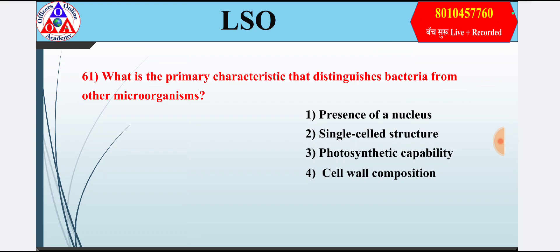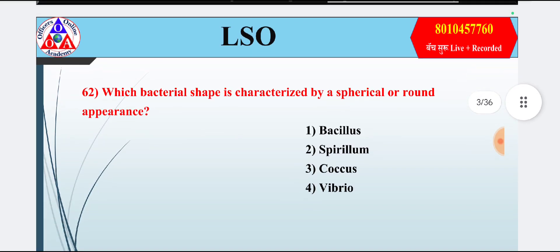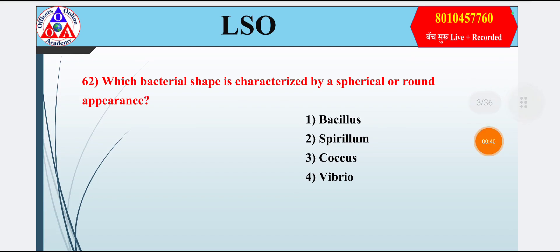Question 1: What is the primary characteristic that distinguishes bacteria from other microorganisms? Option 1: presence of nucleus; option 2: single cell structure; option 3: photosynthetic capability; option 4: cell wall composition. Answer is option 4 — cell wall composition.